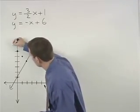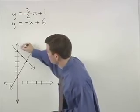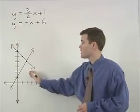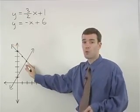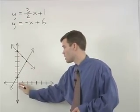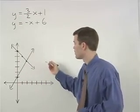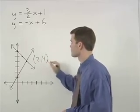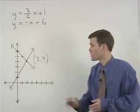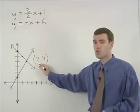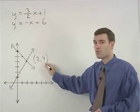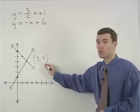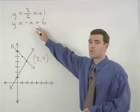So if we graph our second line, you can see that the two lines intersect at this point, which has the coordinates 2, 4. In other words, when x equals 2 and y equals 4, we have the solution for our system of equations.